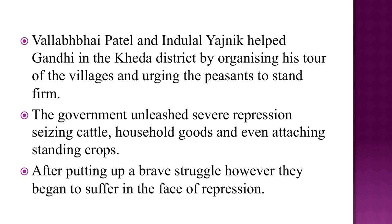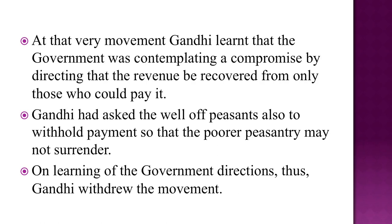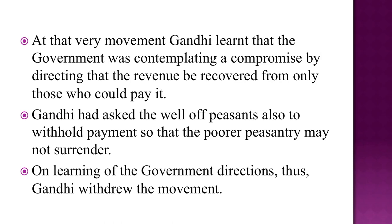Vallabhai Patel and Indulal Yajinik helped Gandhi in the Kheda district by organizing his tour of the villages and urging the peasants to stay firm. The government unleashed severe repression, seizing cattle, household goods, and even attacking standing crops. However, Gandhiji learned that the government was contemplating a compromise by directing that revenue be recovered only from those who could pay. Gandhiji had asked the well-off peasants to withhold payment so the poor peasants may not surrender. On learning of the government's directions, Gandhiji withdrew the movement.